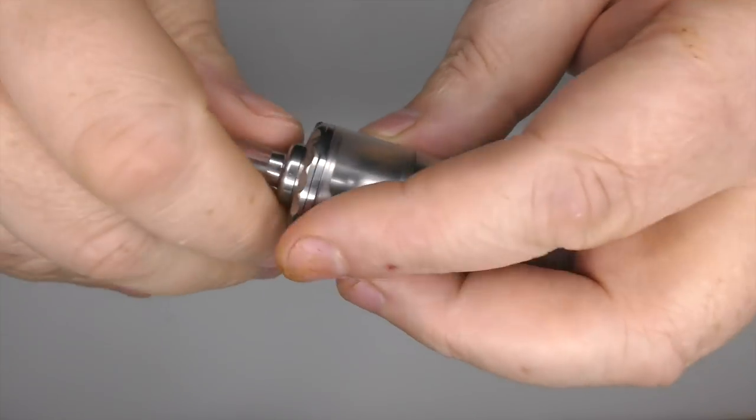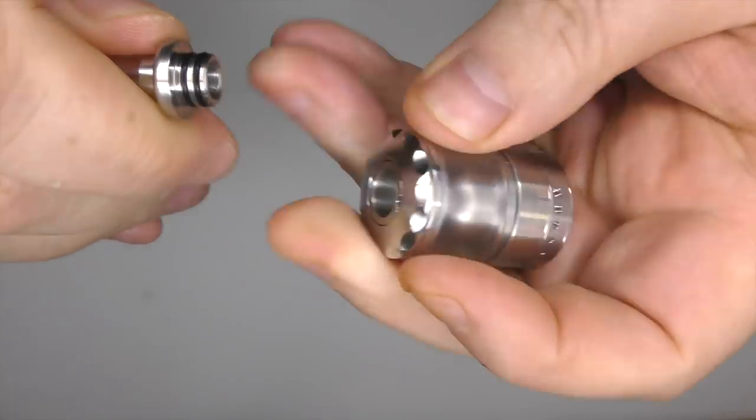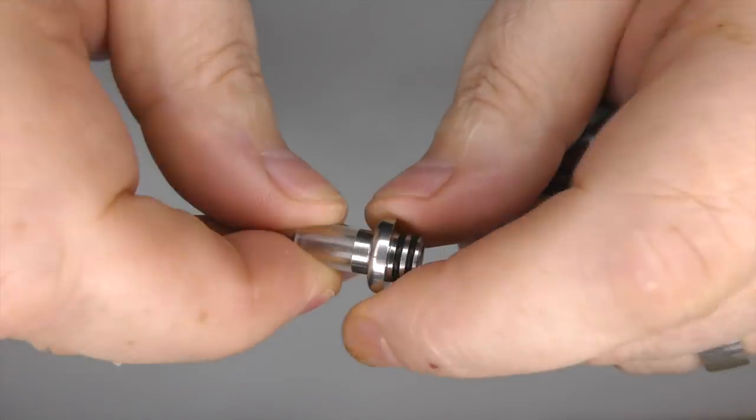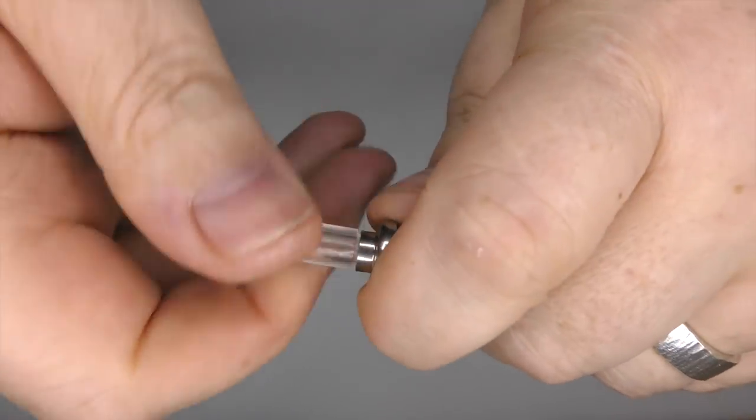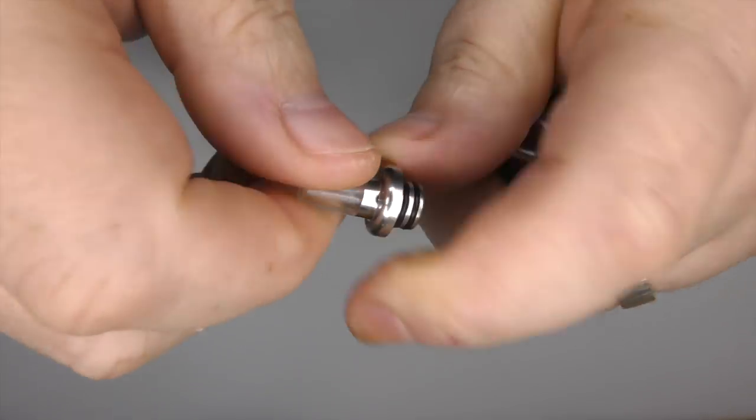Drip tip up the top, you can just pull this off. It's 316 and PMMA construction. So 316 base, double O-ring, and you can actually unscrew this. I don't know if they're going to come out with any other tip or anything, but yeah, it does split apart.